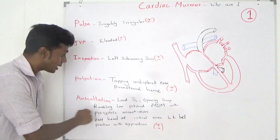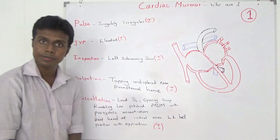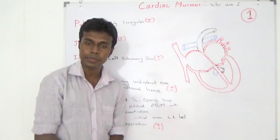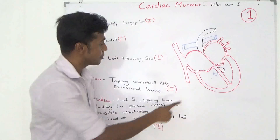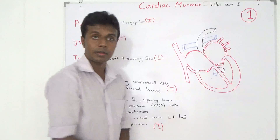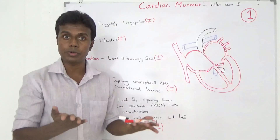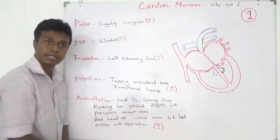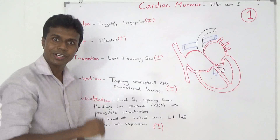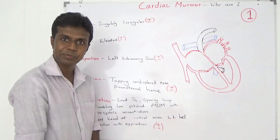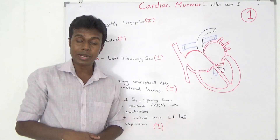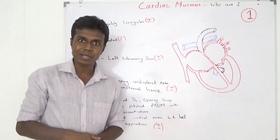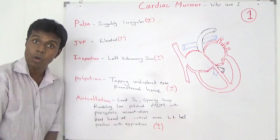On auscultation, there is a loud S1 — the first heart sound is loud. The first heart sound is due to closure of the tricuspid and mitral valve. There is also an opening snap. Just like opening a fresh bottle, you can hear a sound — that is the opening snap.